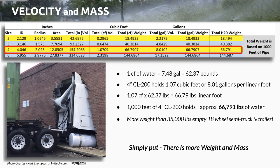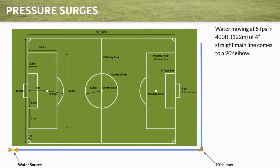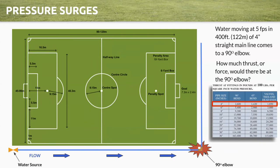So how do we relate that to, say, a soccer field? If water is moving at five feet per second on 400 feet of mainline, how much thrust is there going to be at the elbow in the lower right-hand corner? When you look at that, there are charts out there by various engineering firms, and we'll delve into this in more detail further in the webinar. But in a four-inch mainline at 100 psi, you could actually have as much as 2,600 pounds of thrust. So as you're designing and putting in these systems, you need to be able to manage these surges.